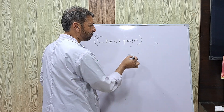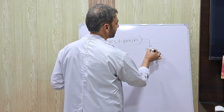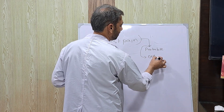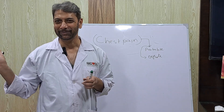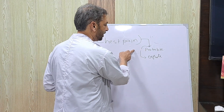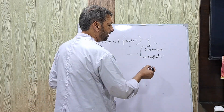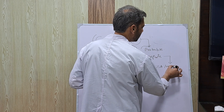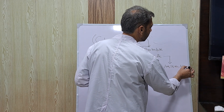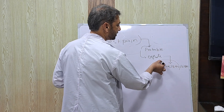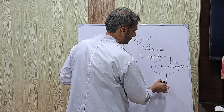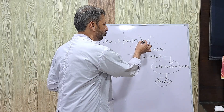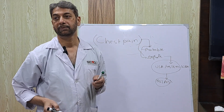In chest pain, sometimes you have a patient with probable ACS, and sometimes definite ACS. We very rarely have non-cardiac patients. So you have to first identify: are you dealing with probable or definite? When you say definite, you need to answer these three things: unstable angina, non-ST, or ST elevation. And if you are unclear, you can combine them as non-ST ACS.